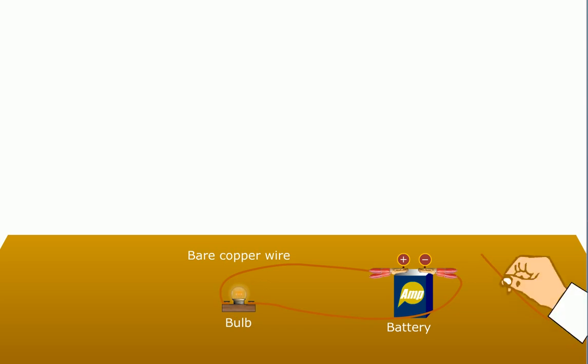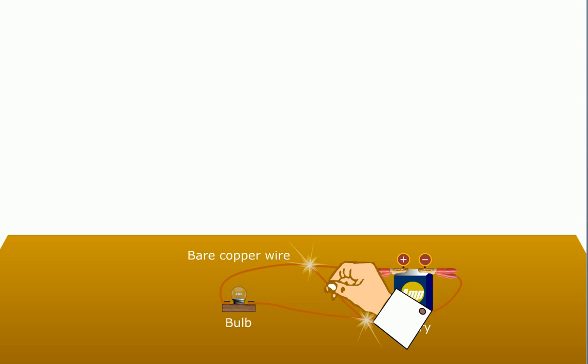Now take the third piece of bare wire and place it across the two bare wires as shown here. We observe that the bulb stops glowing.